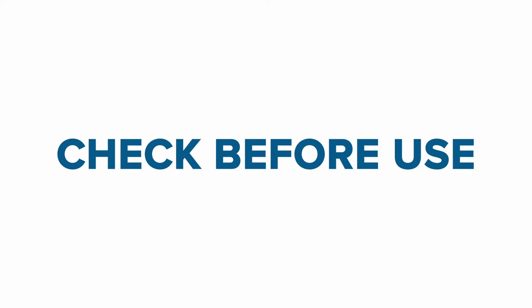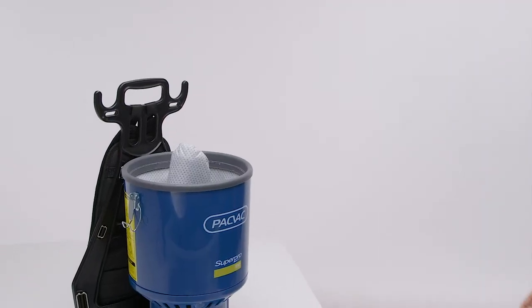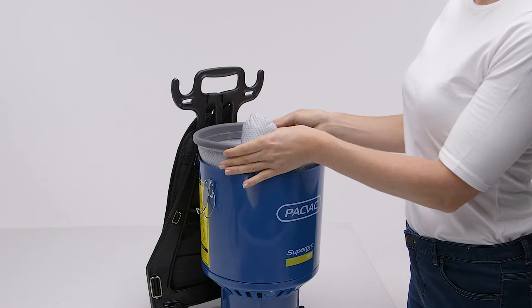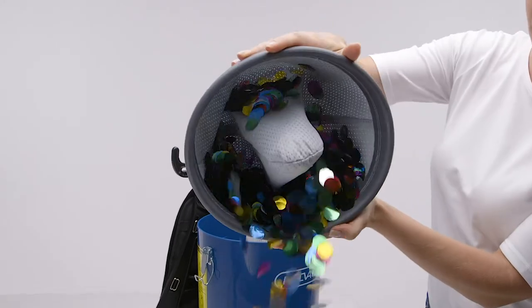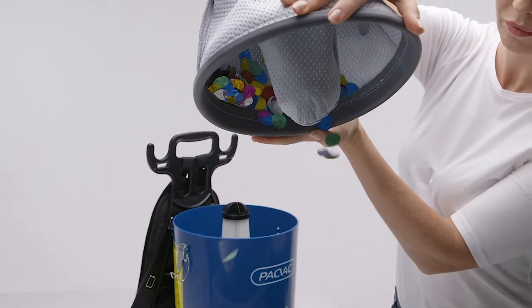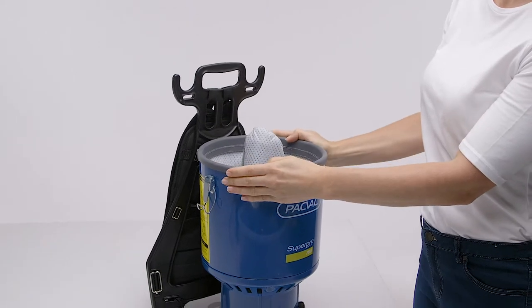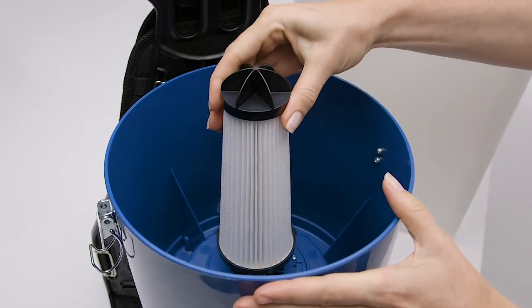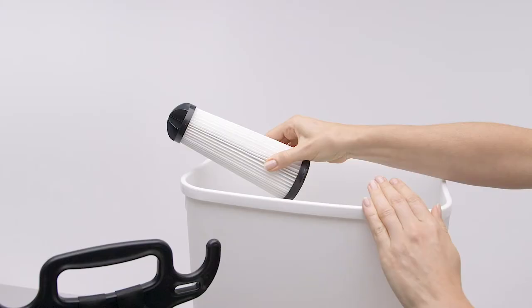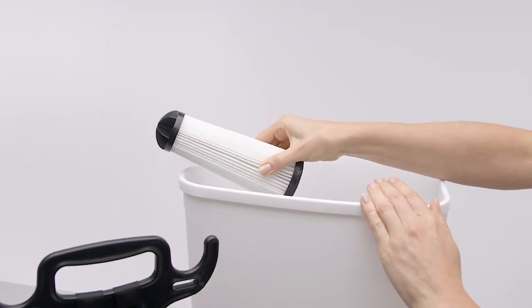To ensure your safety and optimize the output of your machine, we recommend the following safety and maintenance tasks before every use. Remove, empty, and clean the reusable dust bag. Clean the filter by turning it anti-clockwise to unlock and remove, then tap gently to release fine dust.